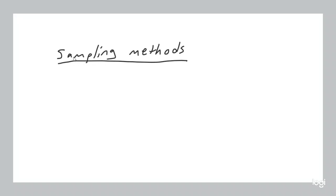These are the kinds of things you want to keep in mind, and there are different sampling methods that have their pros and cons. We're going to discuss five of them. The first sampling method is random sampling.